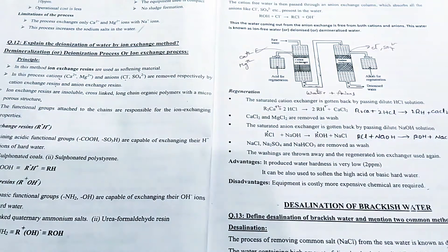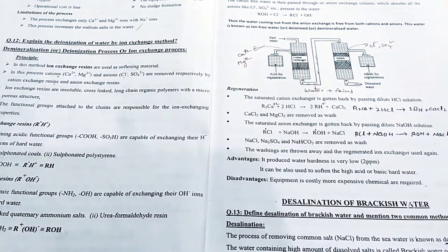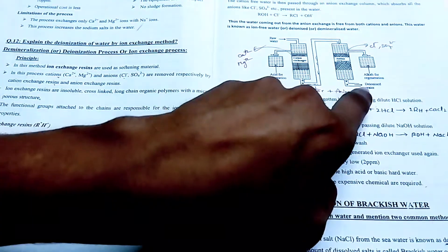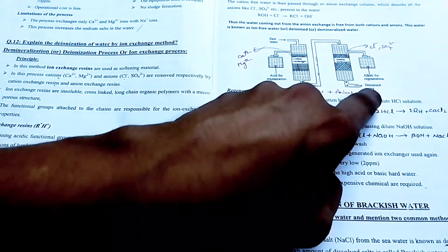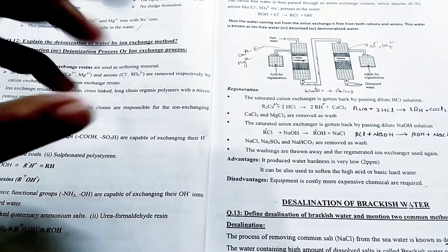After the exchange, the cations H⁺ and the anions are separated. In the final stage, we get deionized water. If there are any chemicals, anions, cations remaining in the water, they are removed here.